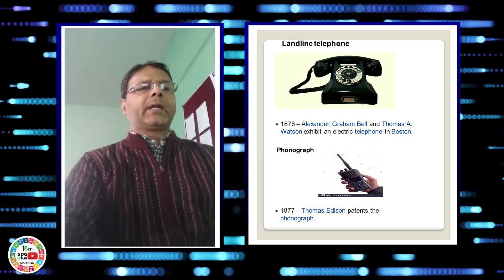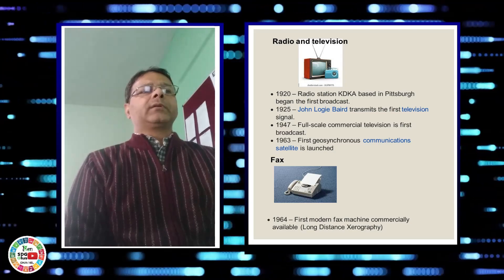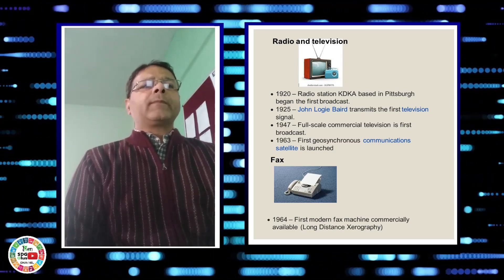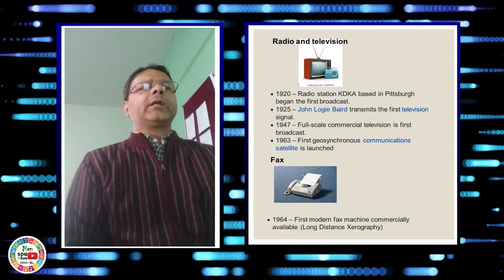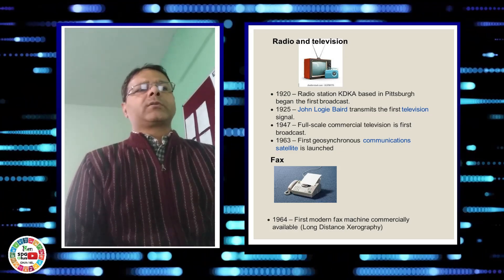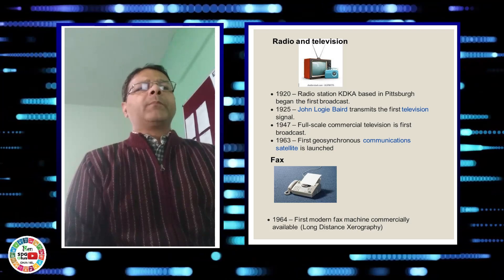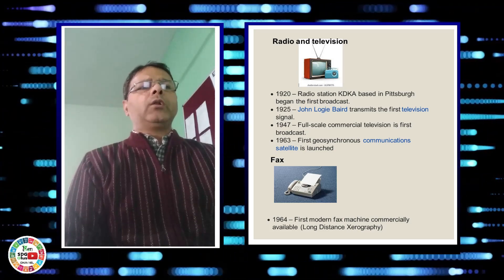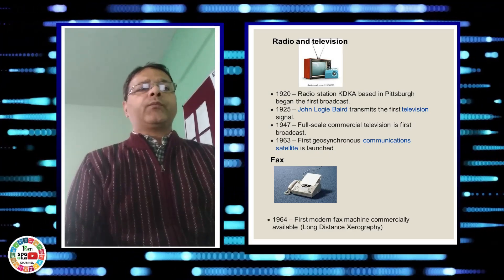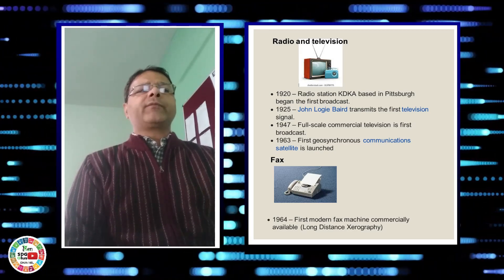Next comes radio and television. The first radio station KDKA was established in the year 1920 in Pittsburgh and started its first broadcast, whereas the first television signal was transmitted by John Logie Baird in the year 1925.